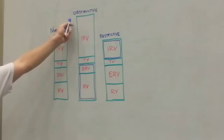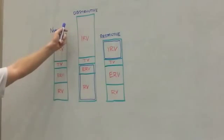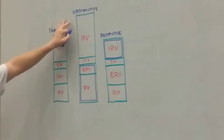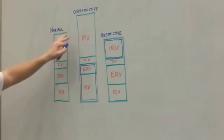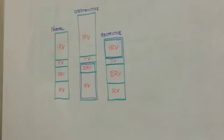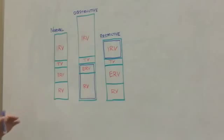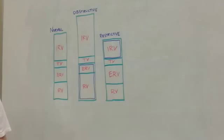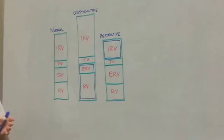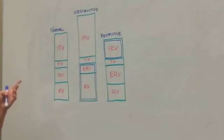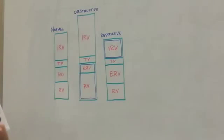In the obstructive category of lung pathologies, you can see that there are slight changes to the diagram. Obstructive pathologies are the kinds that limit or restrict airflow. This means there's something wrong with the actual passageways, the actual movement of air. Obstructive disorders are commonly seen in conditions like asthma, emphysema, and airway tumors.